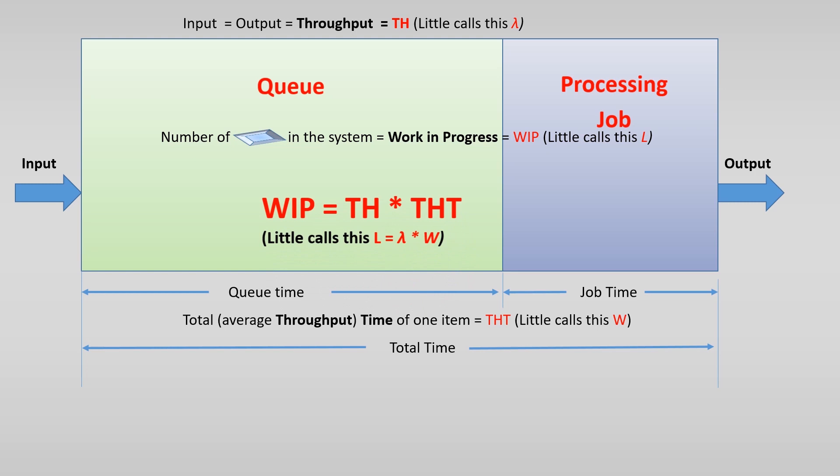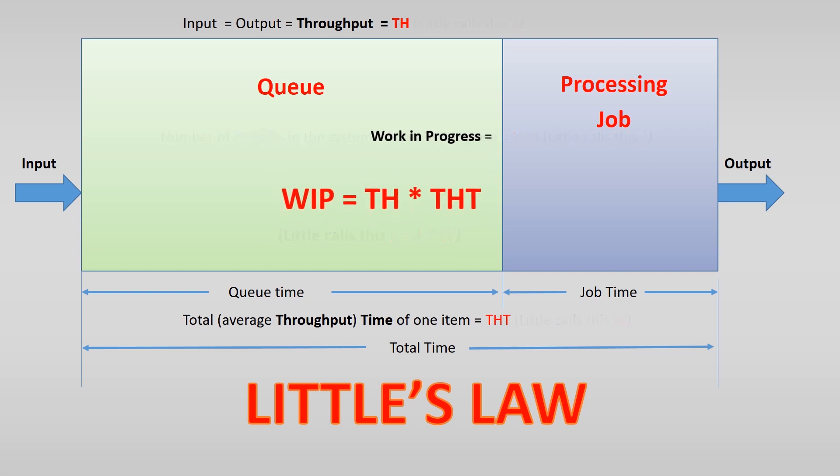You can easily understand that if, for instance, every minute a product enters the production system, and the total time it takes to go through the system takes five minutes, then at a certain time, five products will be in the system. As soon as the sixth product enters the system, the first is leaving it, and so on. So these five items that are continuously in the process is the work in progress.